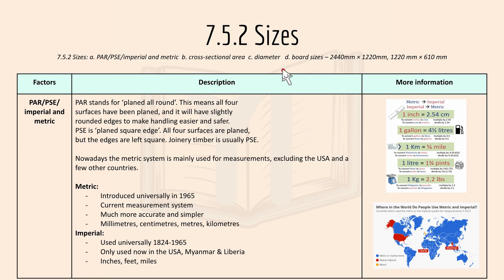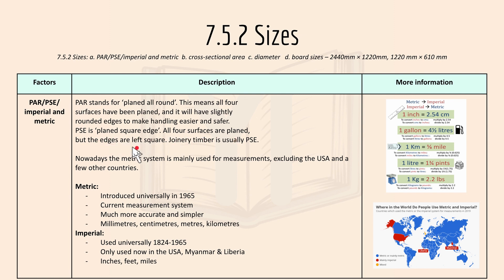Then we have 7.5.2 sizes. So here's PAR, PSE, Imperial and Metric. PAR stands for plain all round — this means all four surfaces have been planed, and it will have slightly rounded edges to make handling easier and safer. PSE is plain square edge — all four surfaces are planed but the edges are left square. Joinery timber is usually PSE.